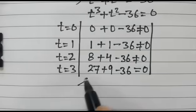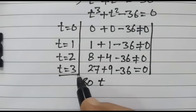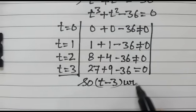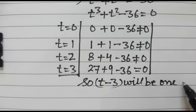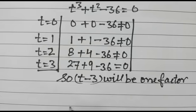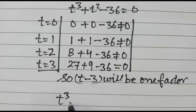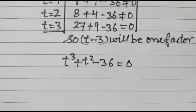So t minus 3 will be one factor of this equation: t cubed plus t squared minus 36 is equal to 0.